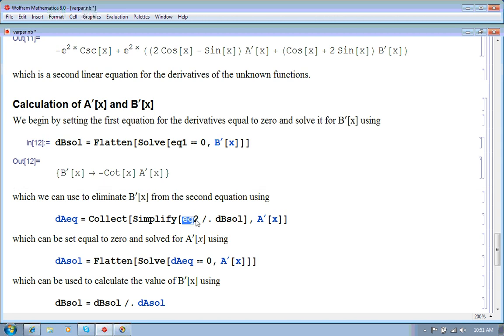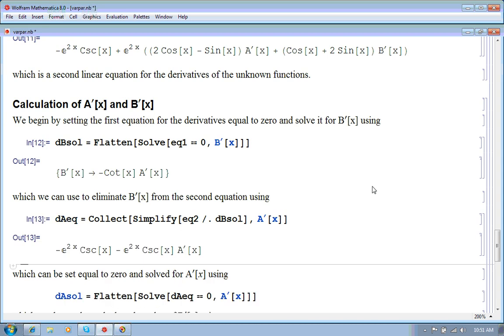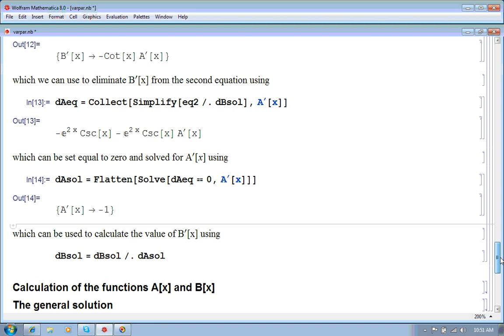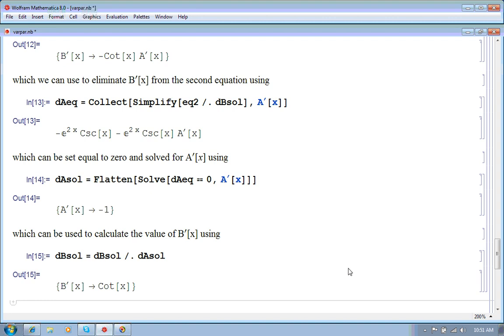So, we take the second equation, replace B prime by this solution here and simplify. And you can see now we've got a very simple linear equation for A prime of x, namely this, and we can set that equal to zero and solve it using this. And that's particularly simple. And then we can put that solution for A prime into our solution for B prime and find that that's what B prime is.